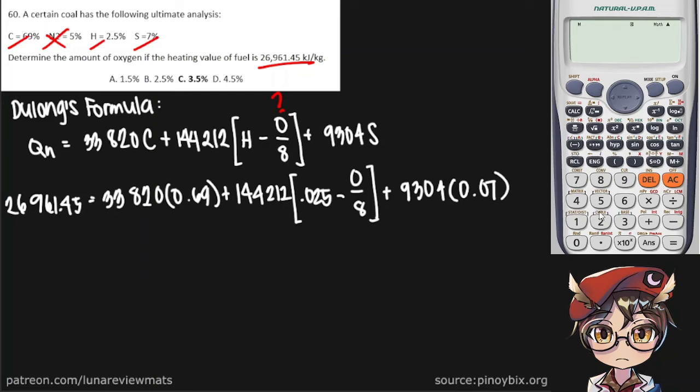So, putting that in our calculator. This is minus. This is what we're looking for. And finally, 9,304 times percent weight of sulfur. Shift, solve. And that is our final answer.